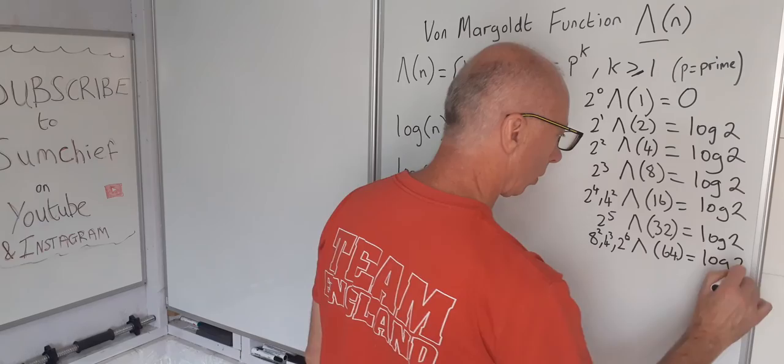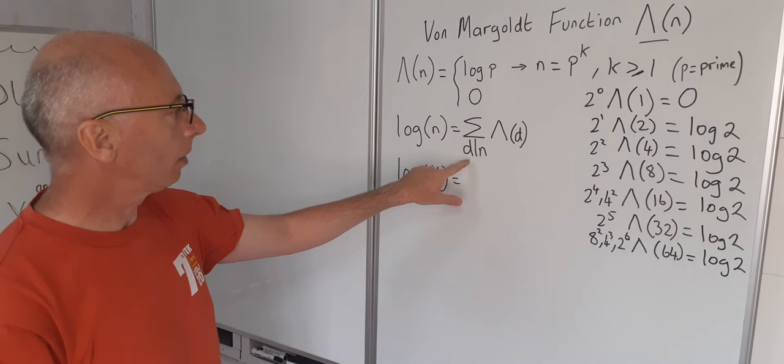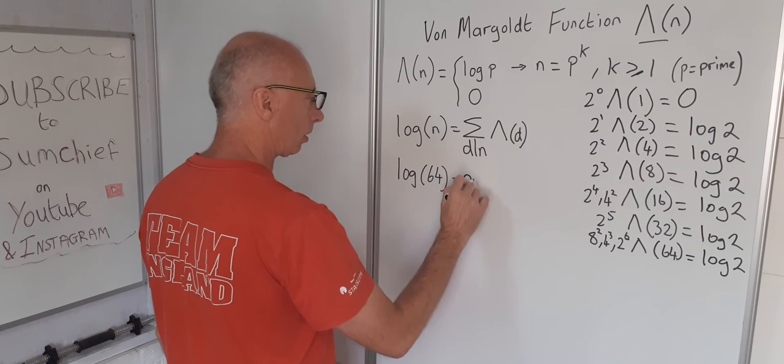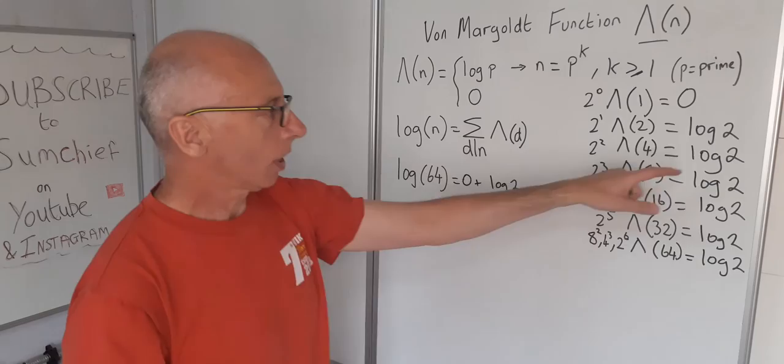Okay, let's use this formula now. Sum of all the divisors of n's von Mangoldt functions equals, let's add all these up. 0 plus log of 2, and how many times? 1, 2, 3, 4, 5, 6 times log 2, which is log of 2 to the power of 6.